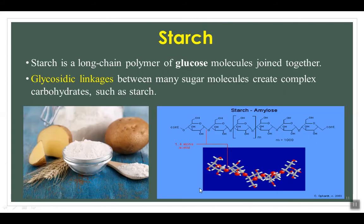Starch is the plant storage carbohydrate. Glucose molecules are joined together in starch, making glucose the monomer unit of starch. Starch is large and insoluble, so it doesn't dissolve and get lost from cells, and it's compact so lots of glucose can be stored in less space. Starch is not very reactive. When we eat starch, we digest it into a disaccharide called maltose — a combination of two glucose molecules — and then maltose is chopped into two glucose molecules during digestion.